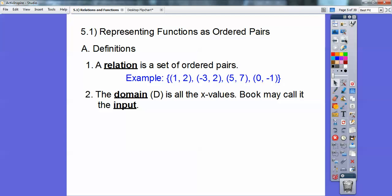The domain, which is D, is all the X values. The book sometimes calls it the input. So up above, it's all these X values. The first number is 1, negative 3, 5, and 0.